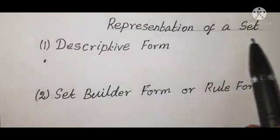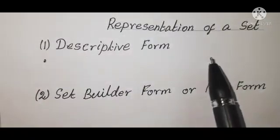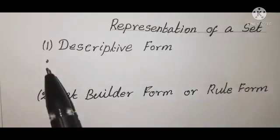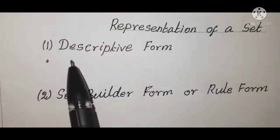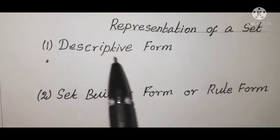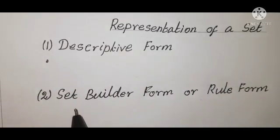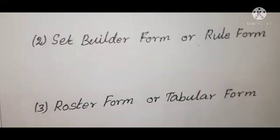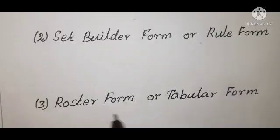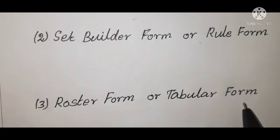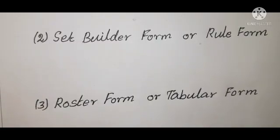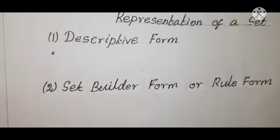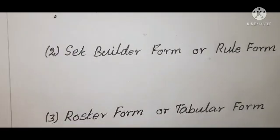Representation of a set. We have three types. First one: descriptive form. Second one: set builder form, or rule form. Third one: roster form, or tabular form.